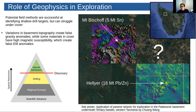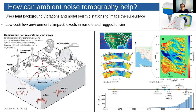So if we want to explore below barren cover, we need new geophysical methods that work well at depth. This is where passive seismic imaging can play a role. Specifically I'm referring to ambient seismic noise tomography. Typically seismic noise has been seen as a nuisance that hides useful signals from earthquakes and active sources, but over the last two decades seismologists have discovered that we can use this seismic noise itself to image the subsurface.